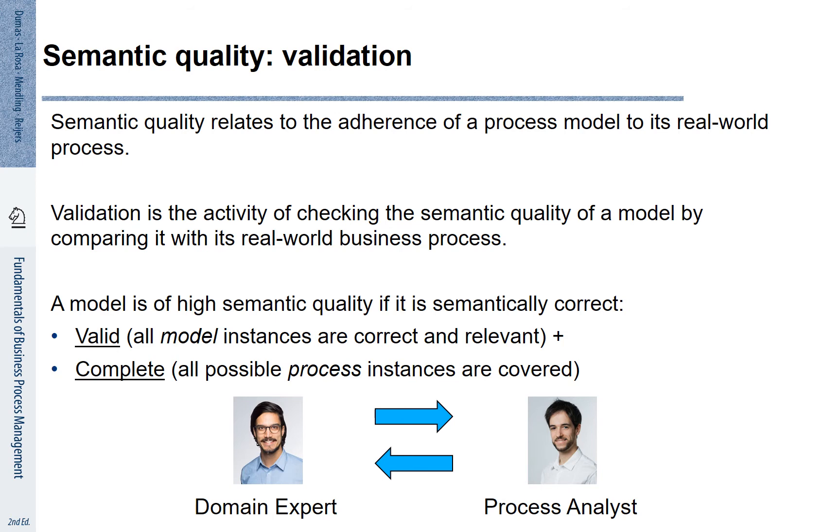The second aspect of quality is semantic quality. Semantic quality cannot be checked automatically. We need to validate. That means we need to build on the expertise of the domain expert in our validation. By interacting and asking the domain expert we want to find out if the model that we are trying to model is valid. That means everything that is represented in the model is actually correct and relevant.